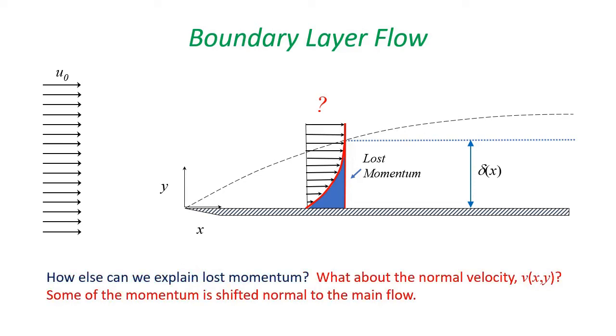Some of you will point out a portion of the missing momentum shows up as the generation of the normal velocity away from the plate. The pile up of slow moving near wall fluid results in a pressure imbalance, hence a vertical velocity. The Prandtl momentum equations tell us how this works.